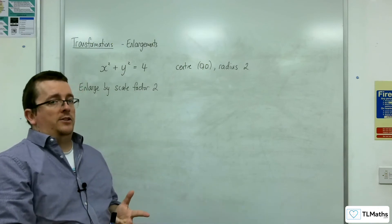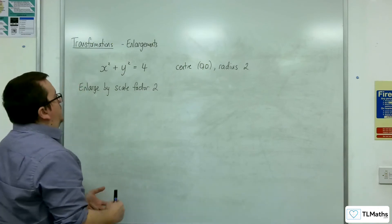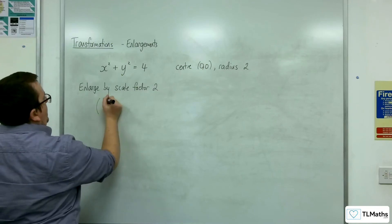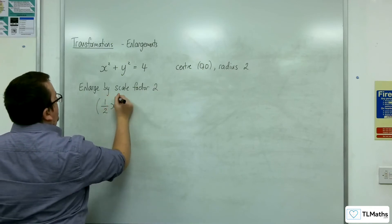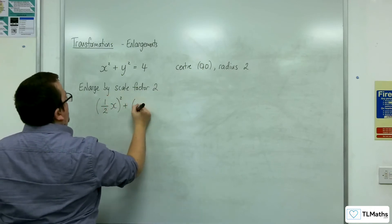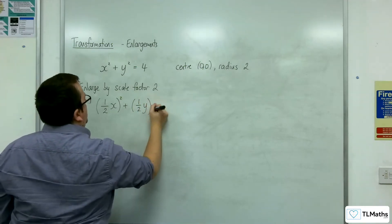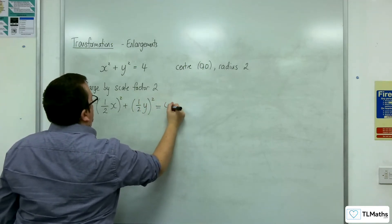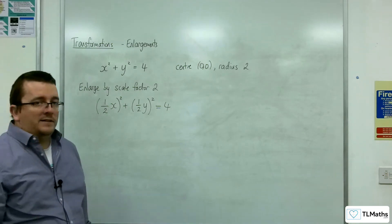So the consequence of that is that we're going to replace the x with one half x and the y with one half y. So both get transformed by the same scale factor.